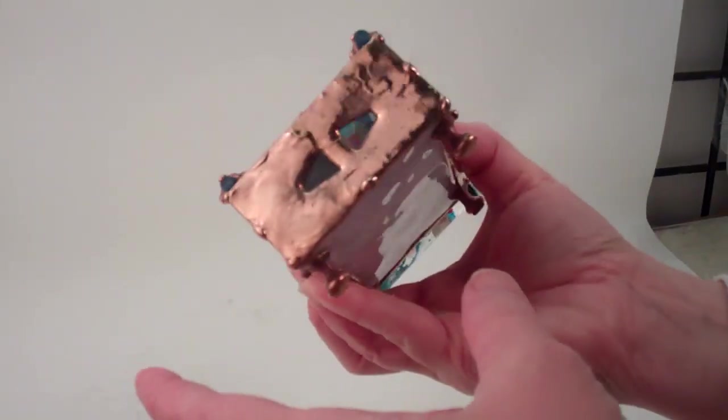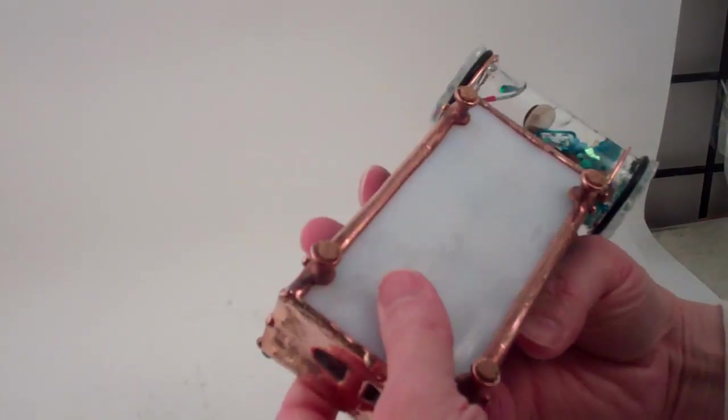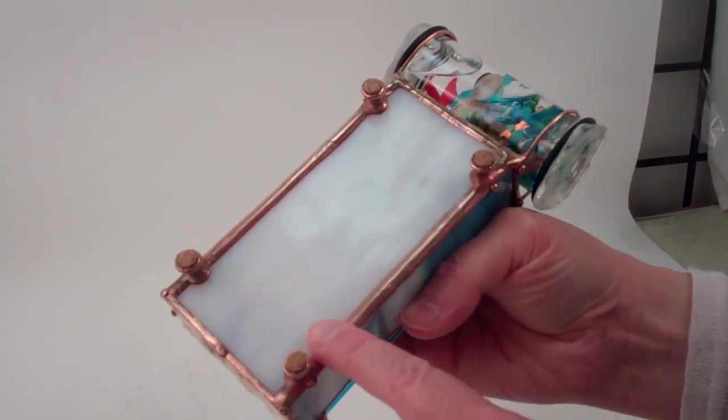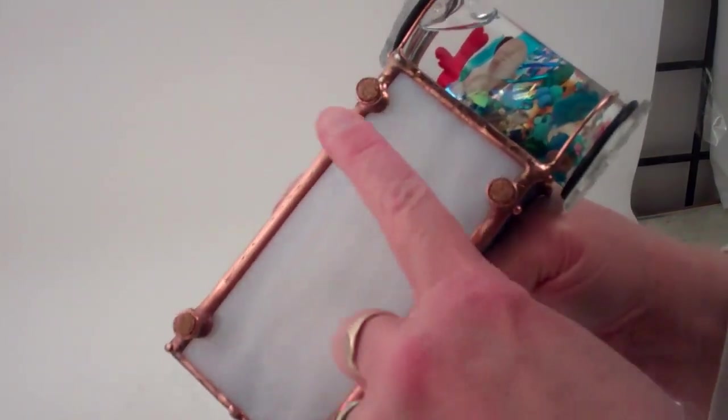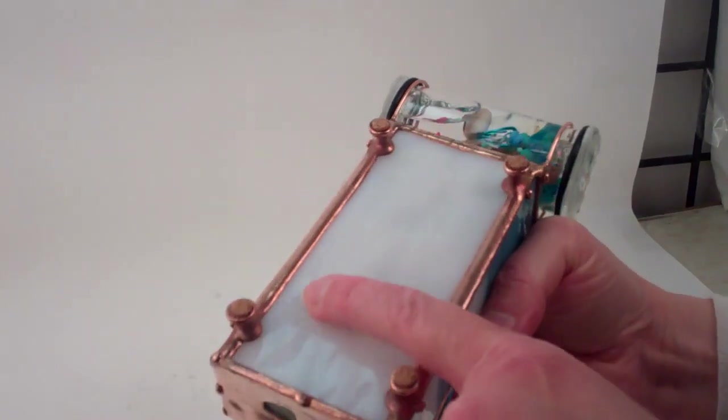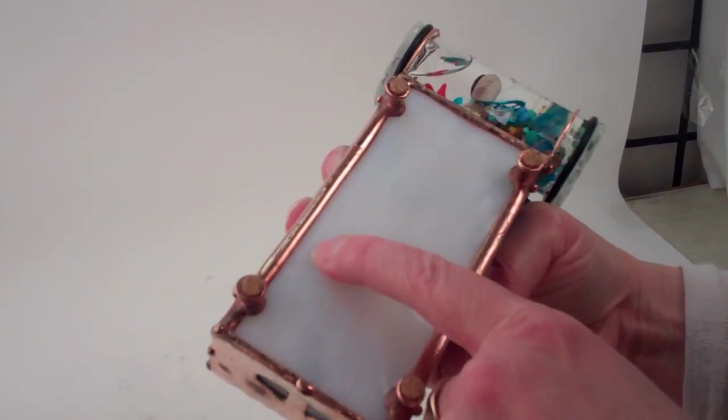Now the kaleidoscope itself is built with traditional copper foil stained glass techniques and the feet have cork pads on all four feet so it won't leave any solder marks or lead marks.